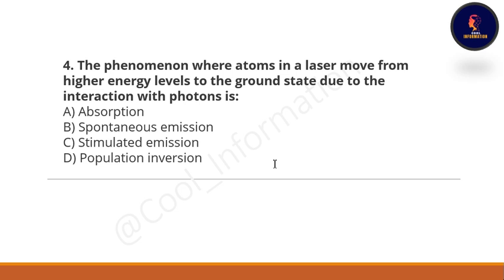Next question: The phenomenon where atoms in a laser move from a higher energy level to the ground state due to interaction with a photon is known as what? Option A: absorption. Option B: spontaneous emission. Option C: stimulated emission. Option D: population inversion. You may notice all four options are the same across these questions, but the answers differ because the questions are different. Correct option is C, stimulated emission.